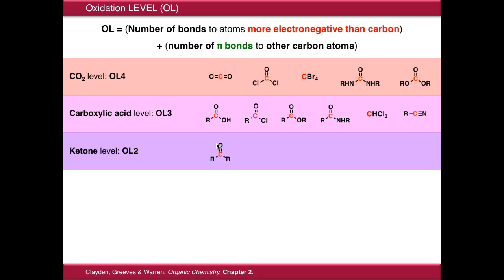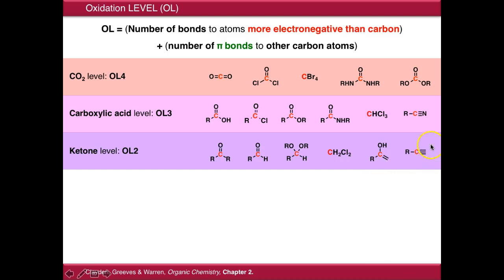Dropping down again, this is the ketone level, where carbon is making two bonds to atoms that are more electronegative than carbon. It includes ketones, aldehydes, acetals, and dihalides like dichloromethane. We also start to incorporate carbon-carbon multiple bonds here — an enol fits because it forms one bond to an electronegative atom and one pi bond to another carbon. Alkynes also fit because they form two pi bonds to another carbon atom.